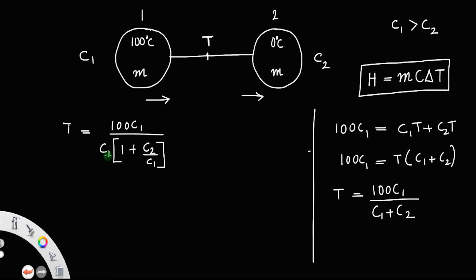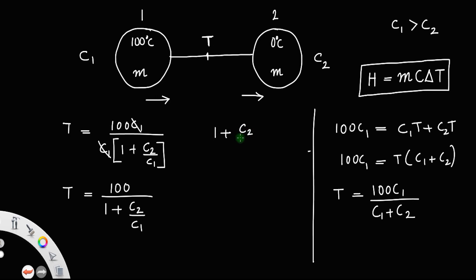This simplifies to t equals 100 divided by (1 plus c2/c1). Now look at the denominator: since c1 is always greater than c2, c2 divided by c1 will always be less than 1.